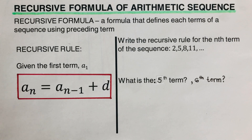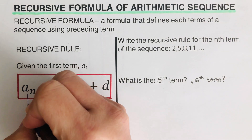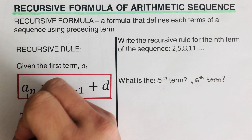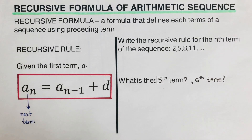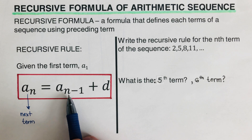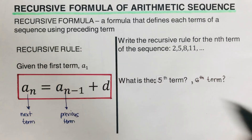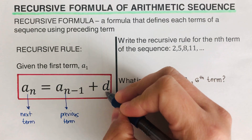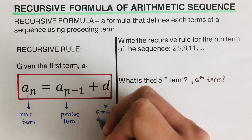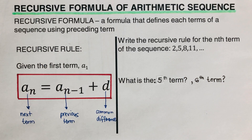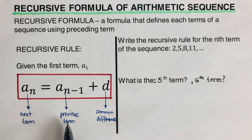In layman's terms, we can define each part of this formula. Our a sub n is the next term. Our a sub n minus 1 is the previous term. And our d is the common difference. So this recursive formula will give us the next term once we know the previous term — we have to have the previous term to get to the next term.